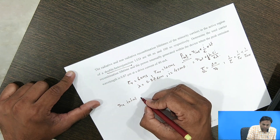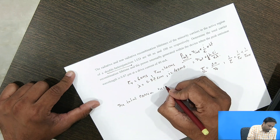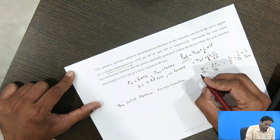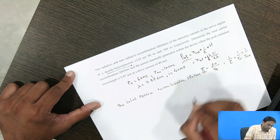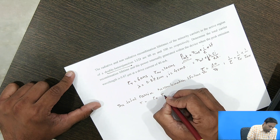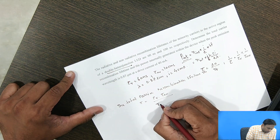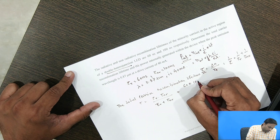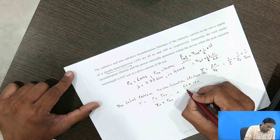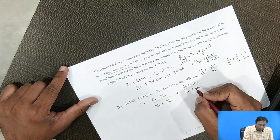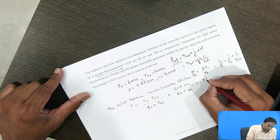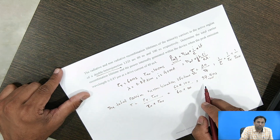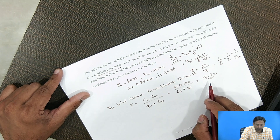Using the formula, the total recombination lifetime τ = (τ_r × τ_nr) / (τ_r + τ_nr) = (60 × 100) / (60 + 100). Calculating this gives τ = 37.5 nanoseconds as the total carrier recombination lifetime.